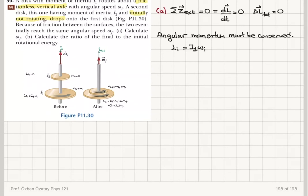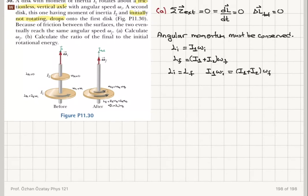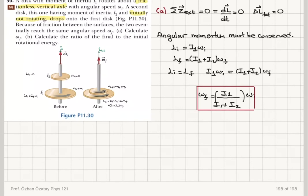The initial angular momentum was I1 times omega initial, because omega 2 initial is zero. The final angular momentum is (I1 + I2) times omega final. Setting these equal: I1 times omega initial equals (I1 + I2) times omega final. Therefore, omega final equals I1 divided by (I1 + I2) times omega initial. This is the final angular speed of the combined disks.